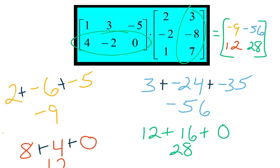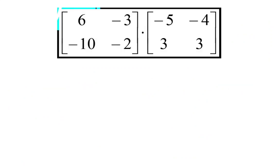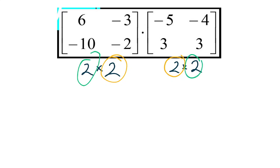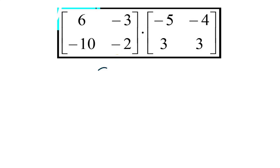That completes the matrix multiplication example, giving us a two by two result matrix. Now try one on your own. You have two matrices to multiply — go ahead and copy them down, pause if needed. Remember to first check that the inner dimensions match. Both of these are two by twos, and since those inner numbers match, you'll produce a two by two result. Create a little two by two to fill in your answers.